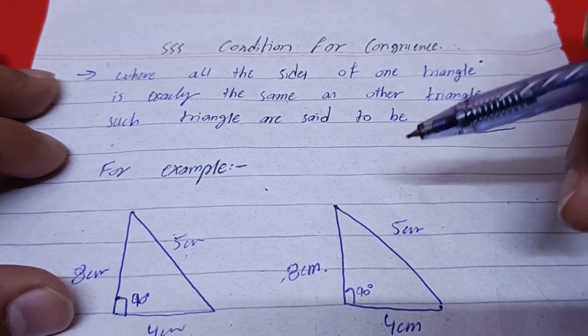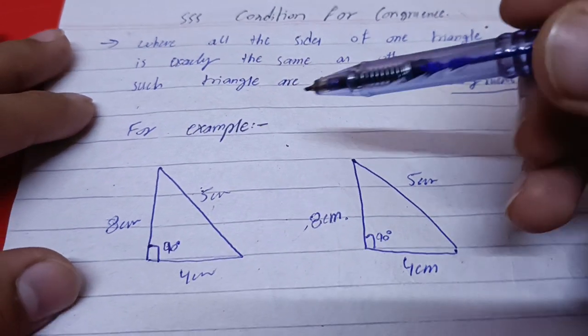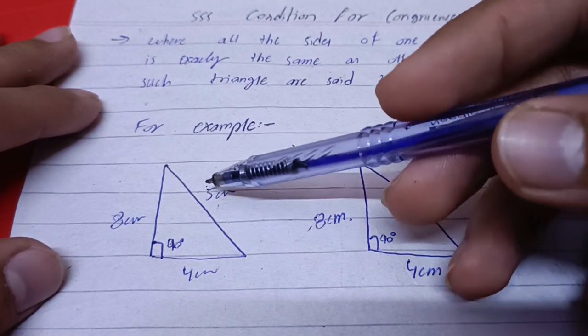So, these two triangles will be congruent. As you can see here, I have an example here.